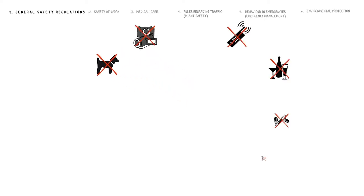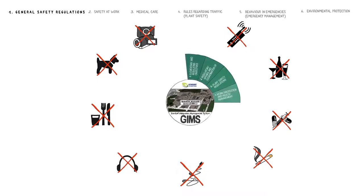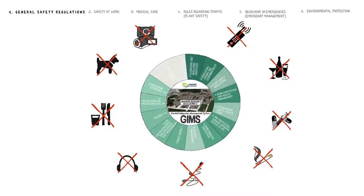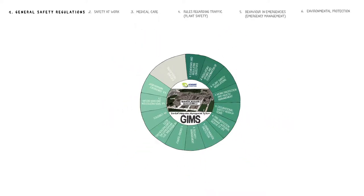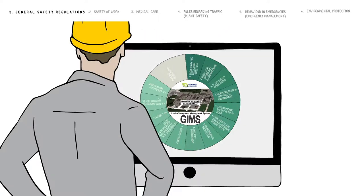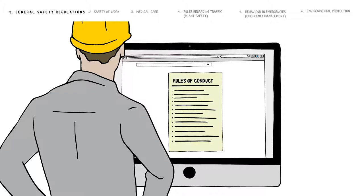This code of conduct applies to all employees at the chemical park under the Gendorf Integrated Management System, GEMS for short, which can be viewed on the intranet. There you will find a summary of all the work policies on health, safety and environmental protection. Information for third party firms can be obtained from the Gendorf Chemical Park website.